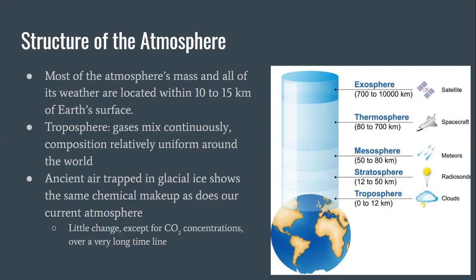So most of the gases, the density of those gases, are there closer to the Earth. In the troposphere the gases mix continuously which means the different types of gases that are inside the troposphere, or its composition, is relatively uniform around the whole world no matter which continent the gases are above. Scientists also found that the ancient air that was trapped inside of glacial ice showed the same chemical makeup that our current atmosphere does, which means over a really long period of time there's been very little change except for some carbon dioxide concentration.